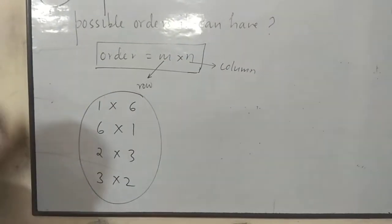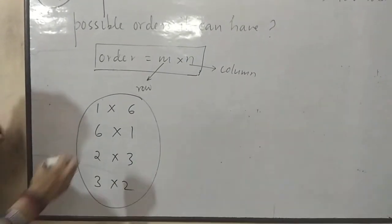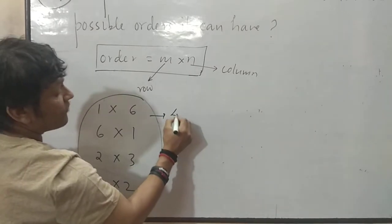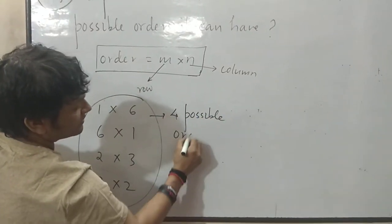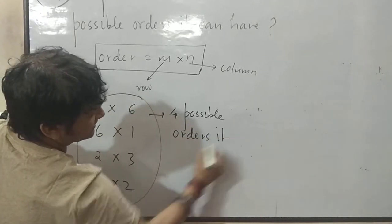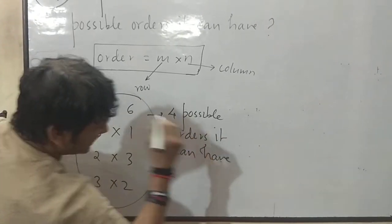Apart from this, 6 will not come. So, how many possible orders? 4 possible orders it can have. Clear?